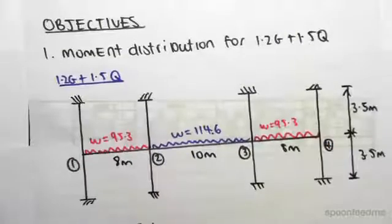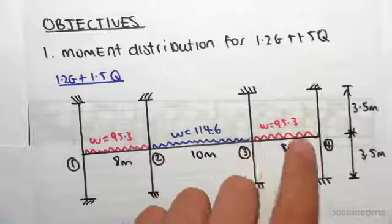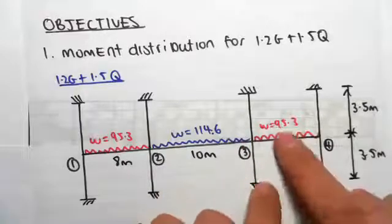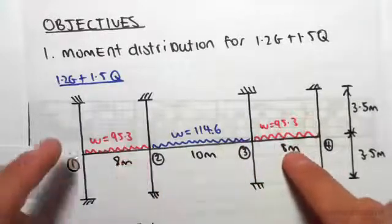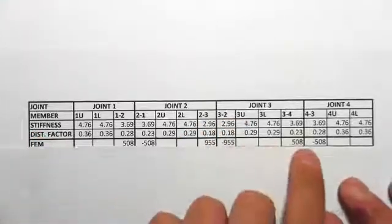It's both that span which is the exact same as this span. The moments are going to be the exact same, so positive 508 minus 508.